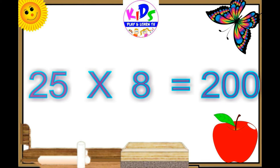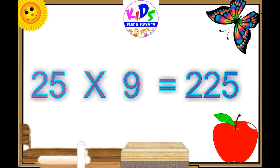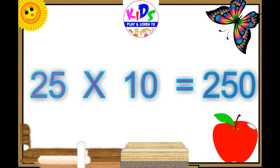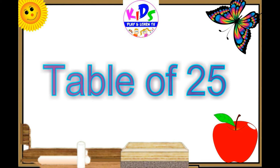25 7s are 175, 25 8s are 200, 25 9s are 225, 25 10s are 250. Let's repeat.